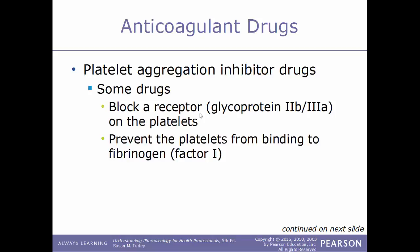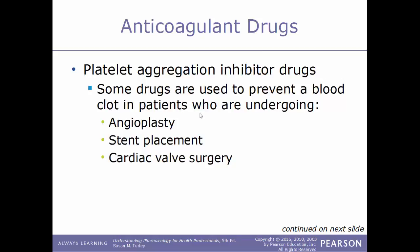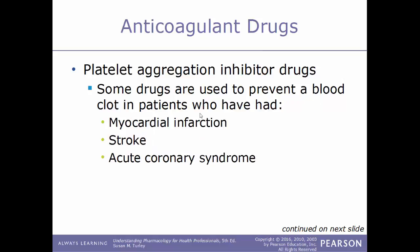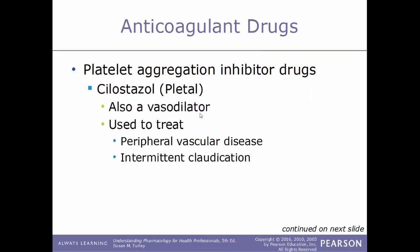Some platelet aggregation inhibitor drugs block a receptor on platelets, and some prevent platelets from binding to fibrinogen, which is clotting factor number one. These drugs are used to prevent blood clots in patients undergoing procedures such as angioplasty, stent placement, or cardiac valve surgery. They can also be given to patients who have had a myocardial infarction, stroke, or acute coronary syndrome. An example is cilostazol, sold under the trade name Pletal, a vasodilator used to treat peripheral vascular disease and intermittent claudication.